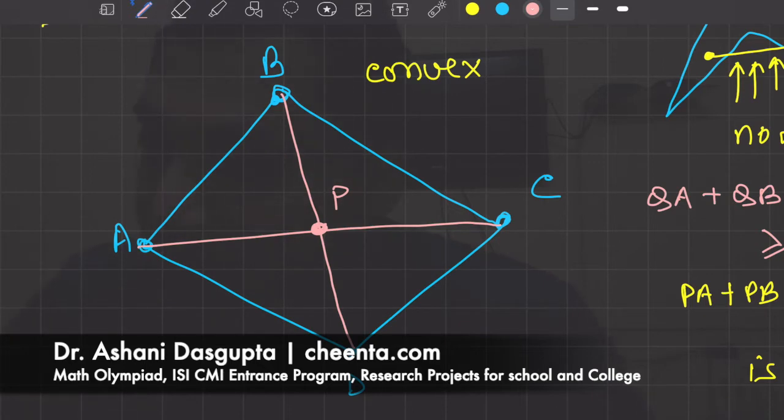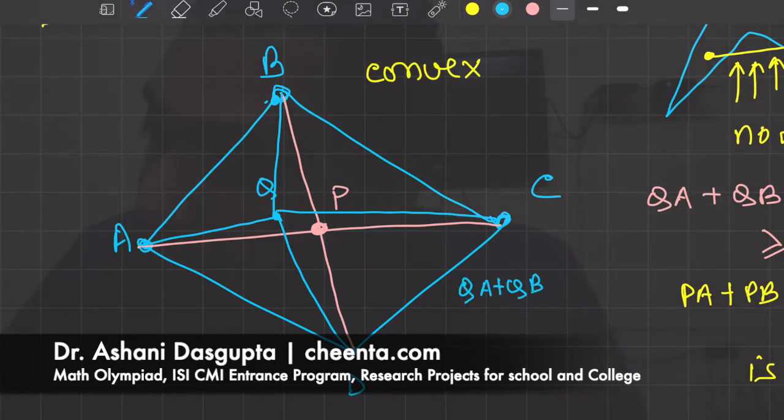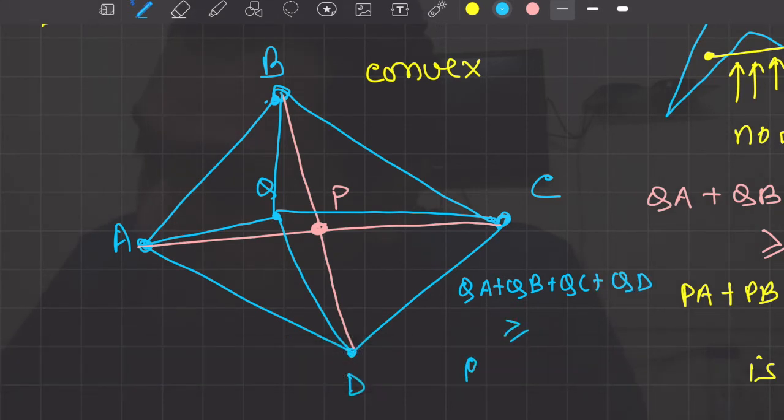How can you show that? Well, you take any other point Q. Let's join QA, QB, QC, and QD. We want to show that QA + QB + QC + QD is greater than or equal to PA + PB + PC + PD.